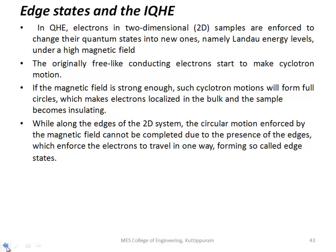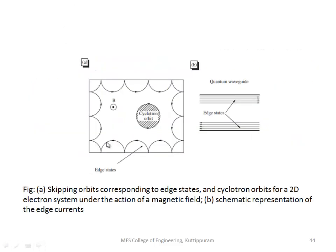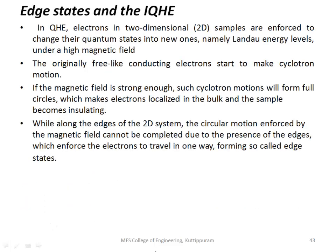At the edges, circular motion is incomplete. And the electrons can travel in one direction. Upper portion, electrons are travelling towards the right side. Lower portion, electrons are travelling towards the left side. These are incomplete circular orbits, called skipping orbits or edge states. Current flow is located in the edges. As a result, electrons can travel towards the right side on the top portion and towards the left side on the bottom portion.